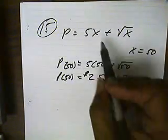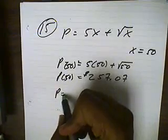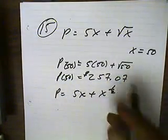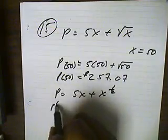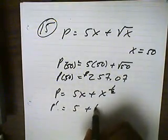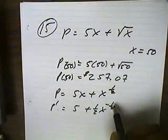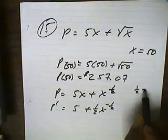Now, marginal profit, we have to take a derivative of this. So, I'm going to convert this into 5x plus x to the 1 half power. So, the derivative of this function will be 5 plus 1 half x to the negative 1 half. I got the negative 1 half from taking 1 half minus 1.